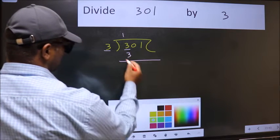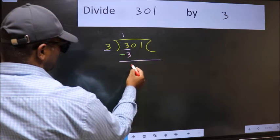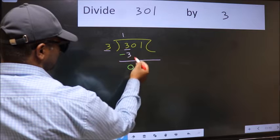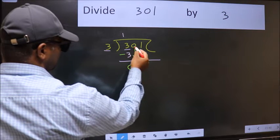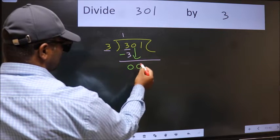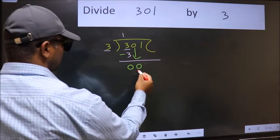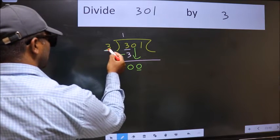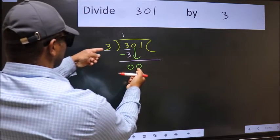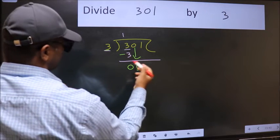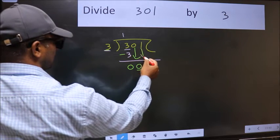Now we should subtract. 3 minus 3, 0. After this, bring down the beside number. So, 0 down. Now, here we have 0 and here 3. 0 is smaller than 3.